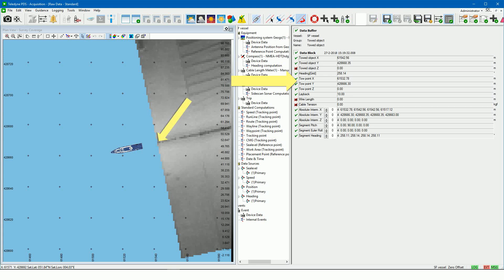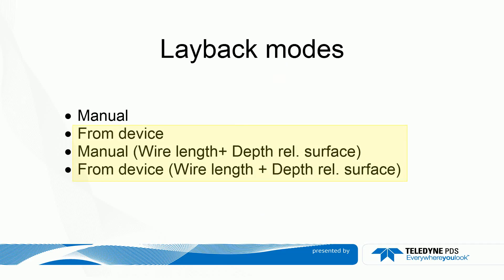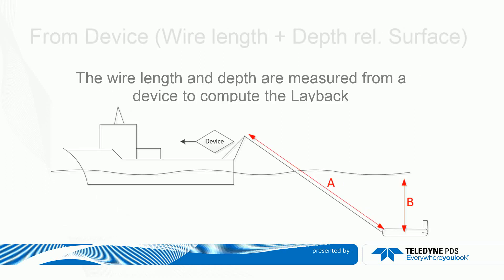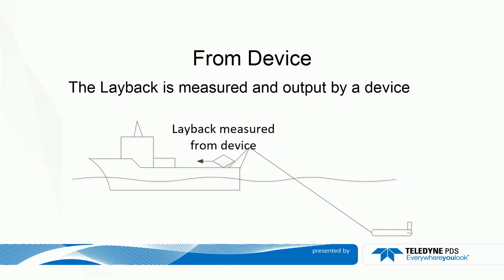Now look at the three other layback modes: from device; manual wire length and depth; and from device wire length and depth. In manual wire length and depth mode, the user enters manually the wire length and depth of the tow fish to compute the layback. In from device wire length and depth mode, a device measures the wire length and depth to compute the layback. With the from device method, the layback is measured by a device.